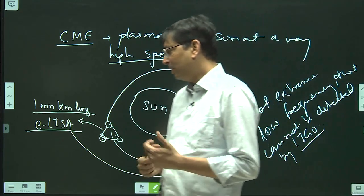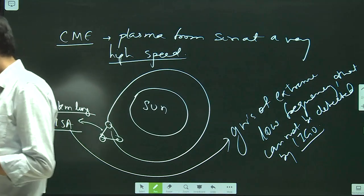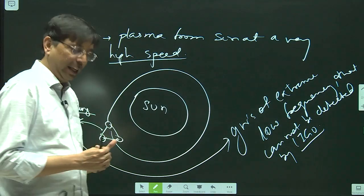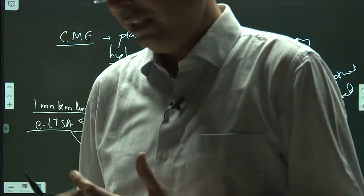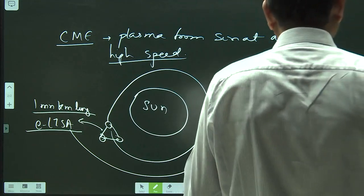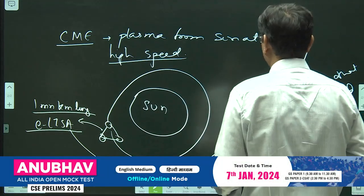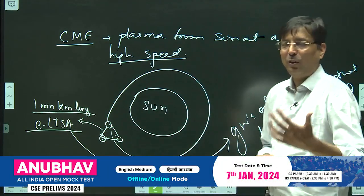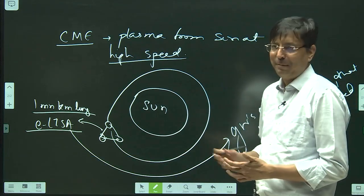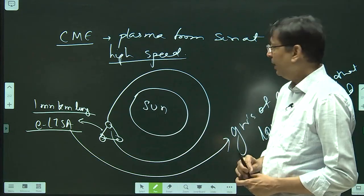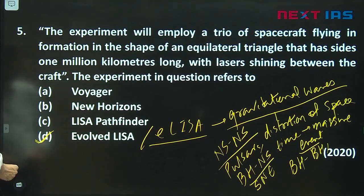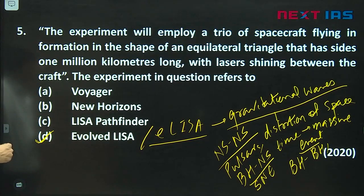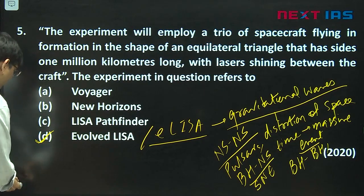Why do we want to study gravitational waves? Because gravitational waves are going to tell us about black holes and the past of the universe. In India as well, LIGO is coming up at Hingoli in Maharashtra — if you have been following newspapers like Indian Express or The Hindu, there have been multiple articles on that. So the answer to this question is evolved ELISA, which is for detecting gravitational waves.